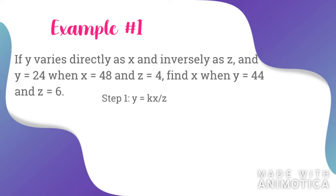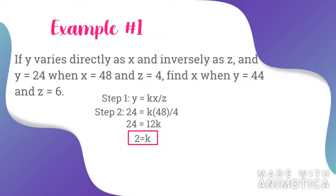So the equation now is going to be 24 is equal to k multiplied by 48 all over 4. Next, we are going to eliminate the denominator, which is 4, by simplifying k multiplied by 48 all over 4. Now we have 24 is equal to 12k. Let's eliminate 12 to get the answer by dividing both sides by 12. Step number three: rewrite the equation from step one, substituting in the value of k found in step two.